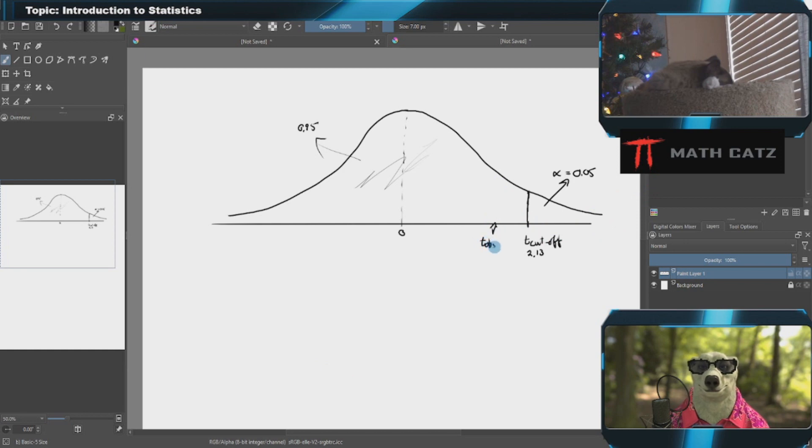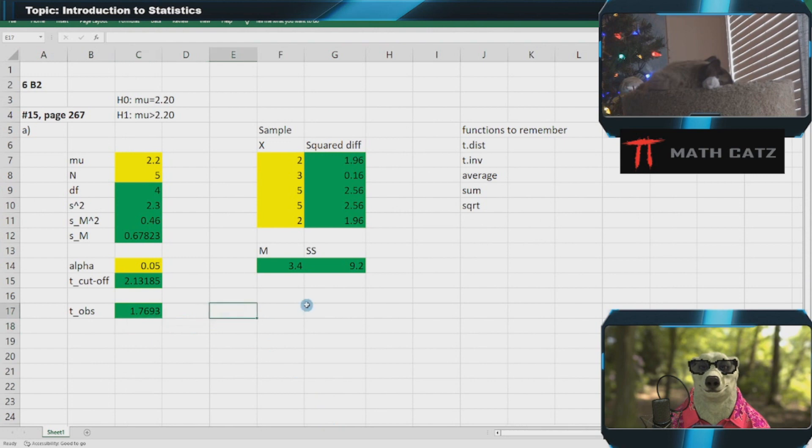Let's visualize that. My t observed 1.77 is not past the cutoff, it's to the left. We take that as not strong enough evidence to suggest that the null hypothesis is not true, because it's very likely to get something in this area, which is why we have that cutoff line to base our decision on.